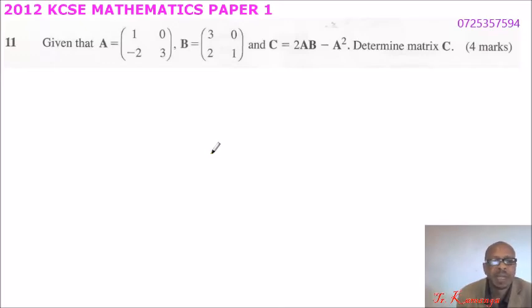Question number 11, 2012 KCSE Mathematics Paper 1. Given that A equals matrix (1, 0; -2, 3), B equals (3, 0; 2, 1), and C equals 2AB minus A squared, determine the matrix C.